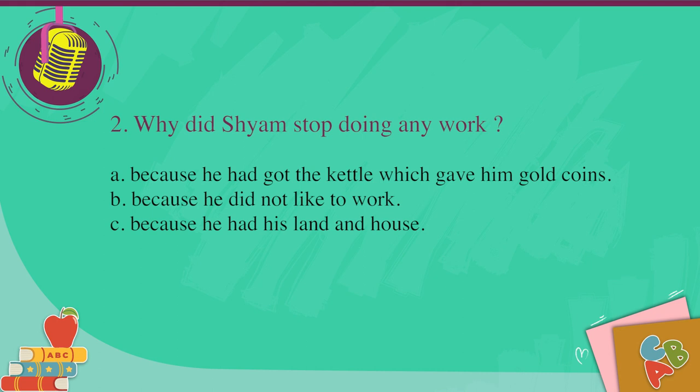You have listened to the story. Now here are some questions for you. Some of them are multiple choice questions, some are true or false. We may listen to this again, but first let's attempt the questions. What did Shyam ask the kettle to do first? The three options are: A — he asked the kettle to pour out coins; B — he asked for clothes for his friends; C — he asked for gifts for his friends. Option A: he asked the kettle to pour out coins.